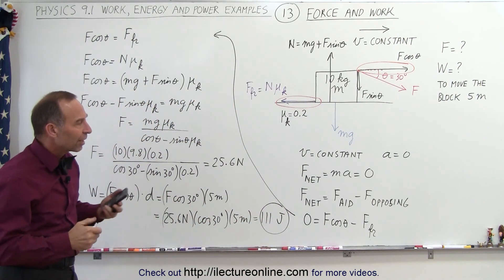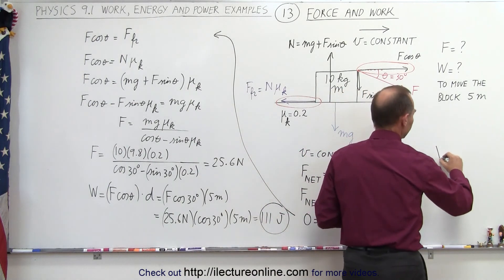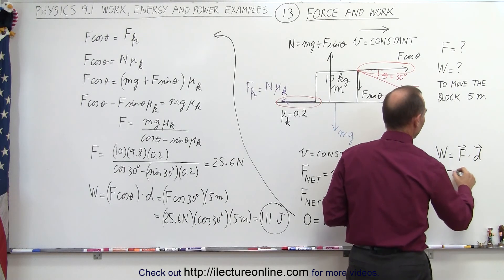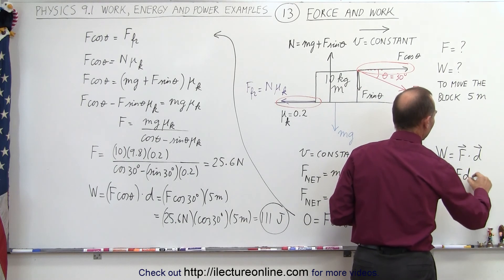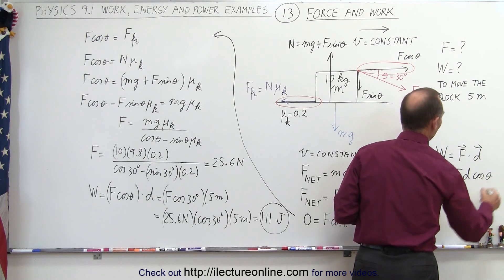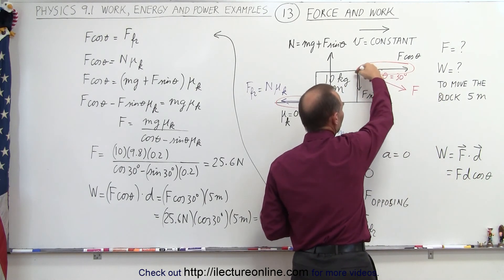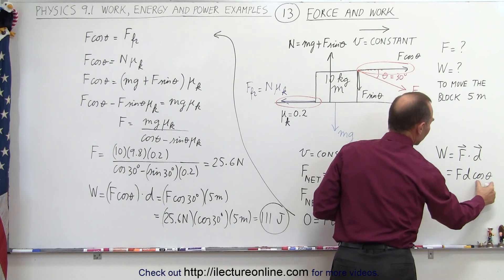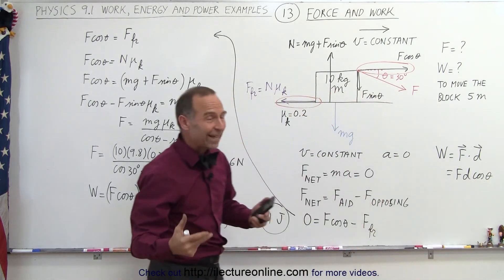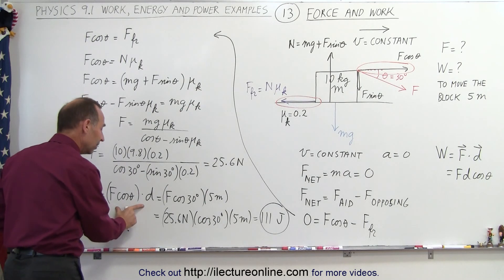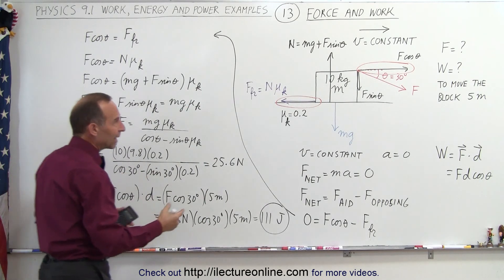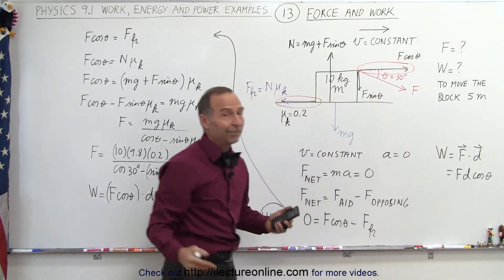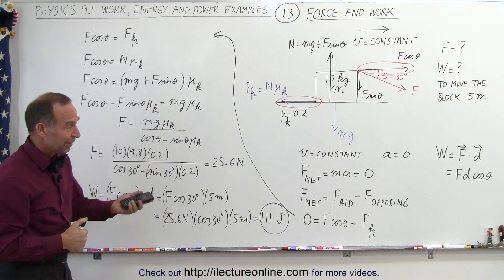Another way of thinking about it: if you've seen dot products, the work done equals the force dotted with the displacement — the magnitude of the force times the magnitude of the displacement times the cosine of the angle between them. So F times 5 meters times cosine of theta gives the exact same equation. Taking the component in the same direction as the motion is equivalent to the dot product — that's what the dot product is and how it's done.